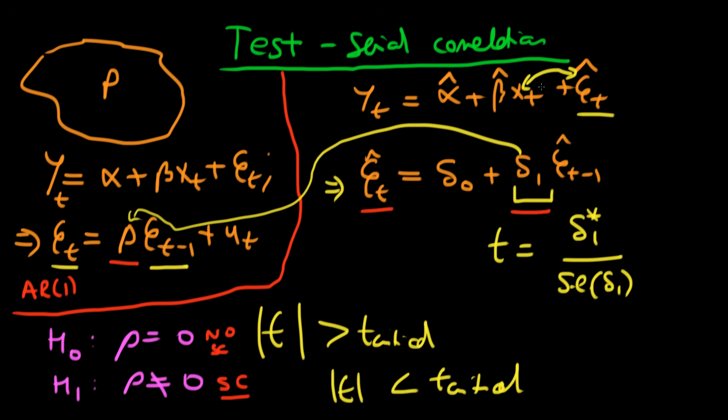There is one potential problem with this test. If we have endogenous regressors - some relationship between x_t and e_t in the population - then it turns out that the way we specified this t-test by this auxiliary regression isn't valid. We need to slightly change this specification to take into account endogenous regressors.